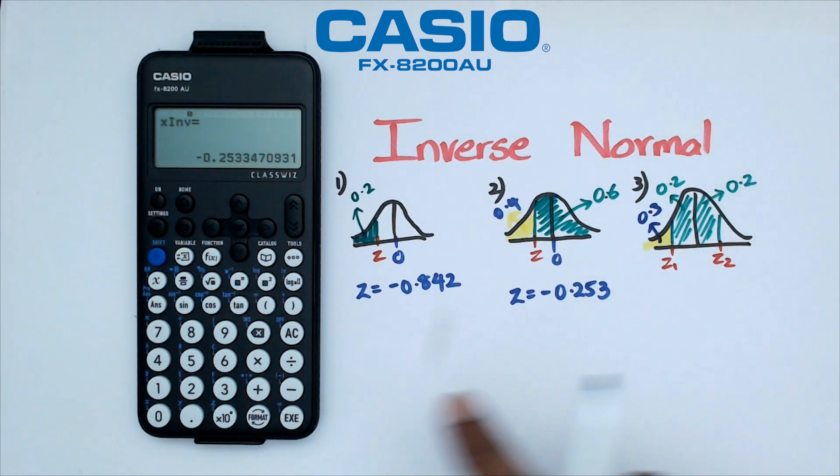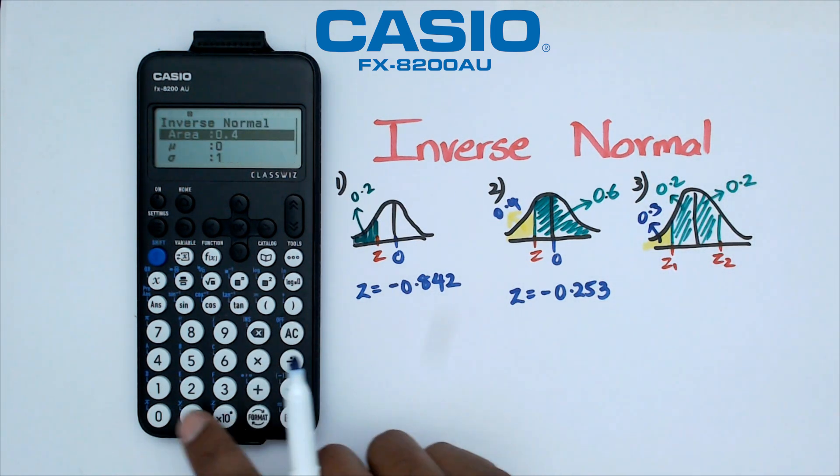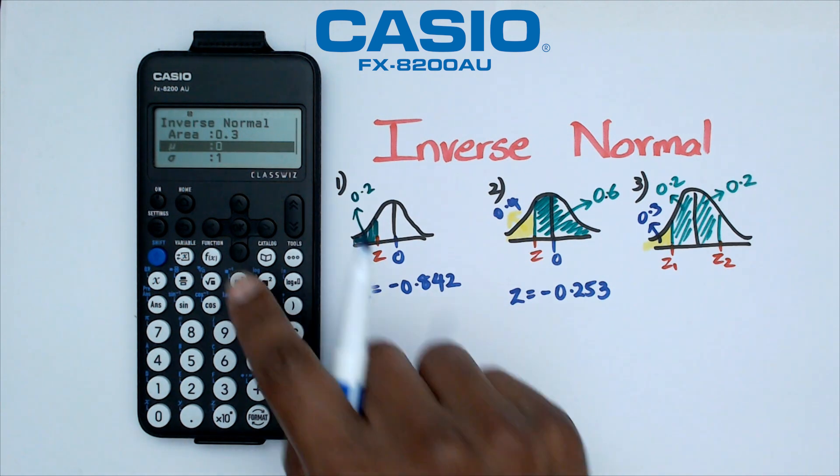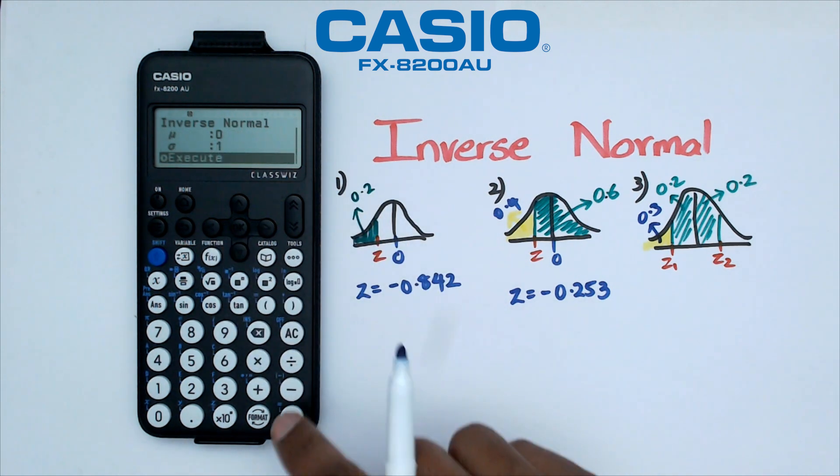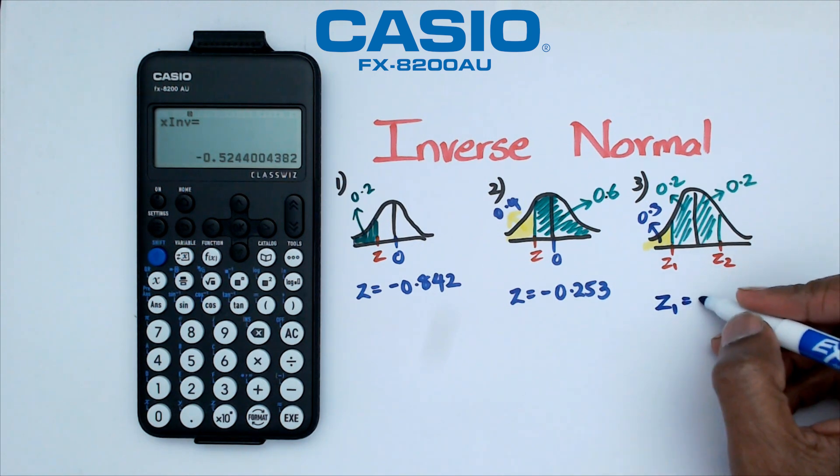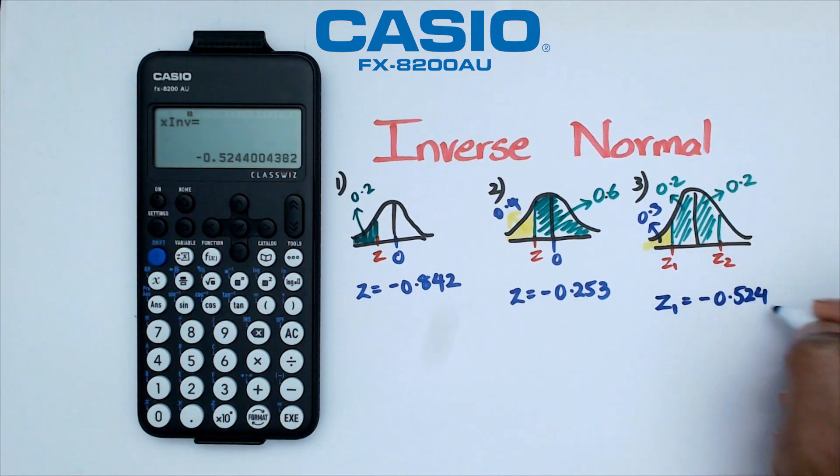So what we then can do is we're going to go back to our area, put in 0.3 and if we put mean is 0, standard deviation is 1, we're going to get Z1 which is equal to negative 0.524.